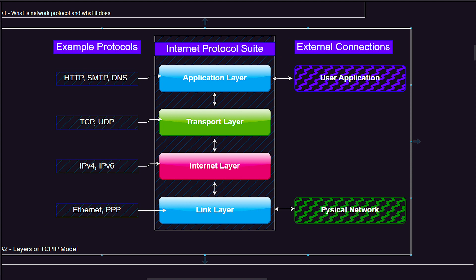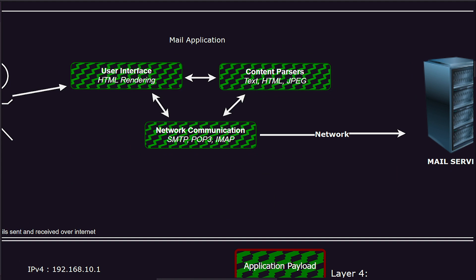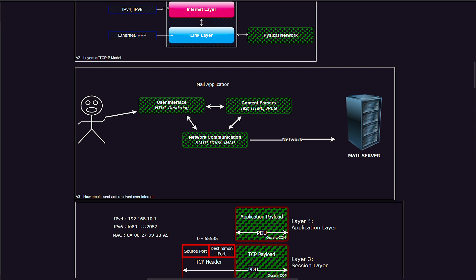By capturing and inspecting network traffic, you gain valuable insights into the inner workings of a network. This ability to pull data from the network and examine its contents is invaluable for network administrators, as it enables them to troubleshoot issues, perform testing, baselining, and monitor the network for potential threats.